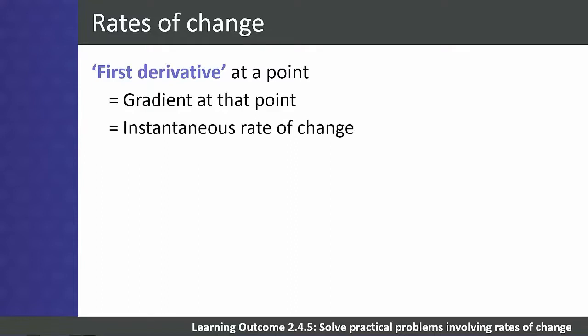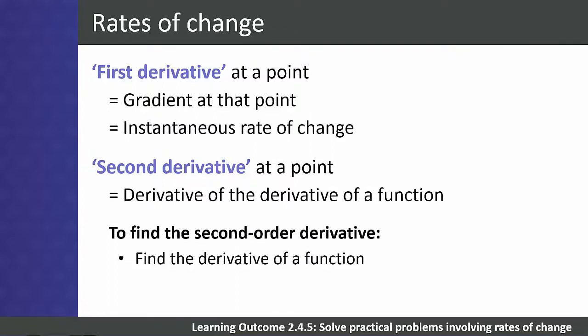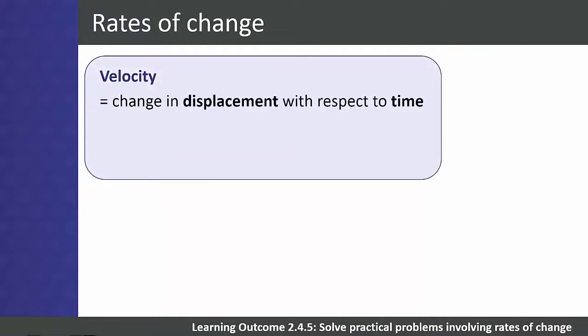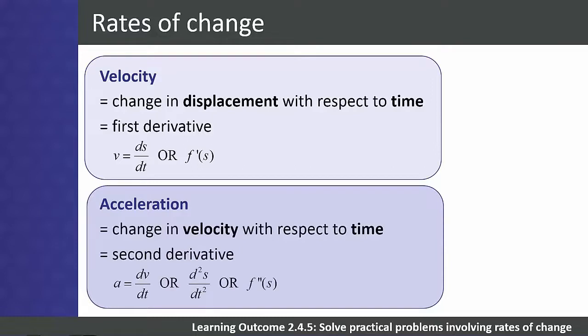We can also find the second derivative of a function, which is new to students at level 4. To find it, we differentiate a function and then differentiate again. First and second derivatives are useful in practical examples: velocity tells us how displacement changes with respect to time — we need the first derivative — while acceleration tells us how fast velocity is changing, requiring the second derivative.